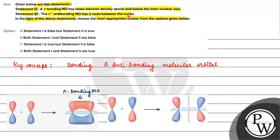We have pi star anti-bonding molecular orbital, so it will have a node. We have pi star anti-bonding molecular orbital, and here we can see the nodal plane between the nucleus. There is a nodal plane present.